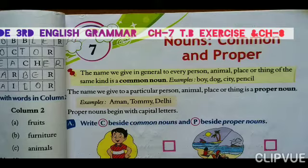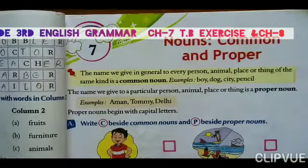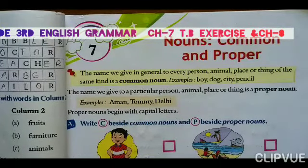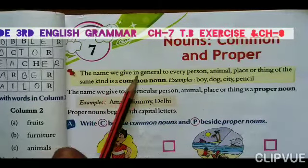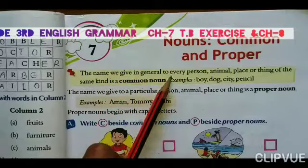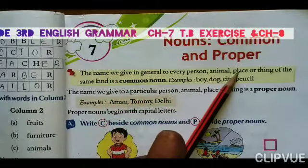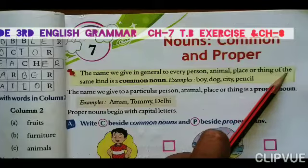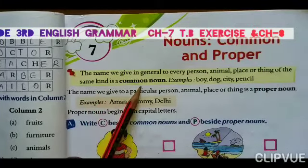There are two types: common and proper. Now let's see the definition. The name we give in general to every person, animal, place, or things of the same kind is a common noun.